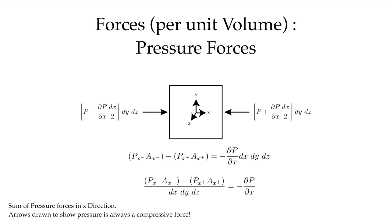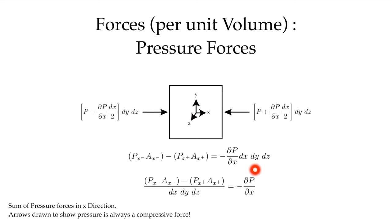When we divide by the volume to get force per unit volume, the net force in the x direction due to pressure is simply minus dp/dx. We'll see this pattern repeatedly with a control volume: because we expand variables from the center to each face using rates of change, the differences always reduce to just the derivative — or gradient — of the quantity of interest.